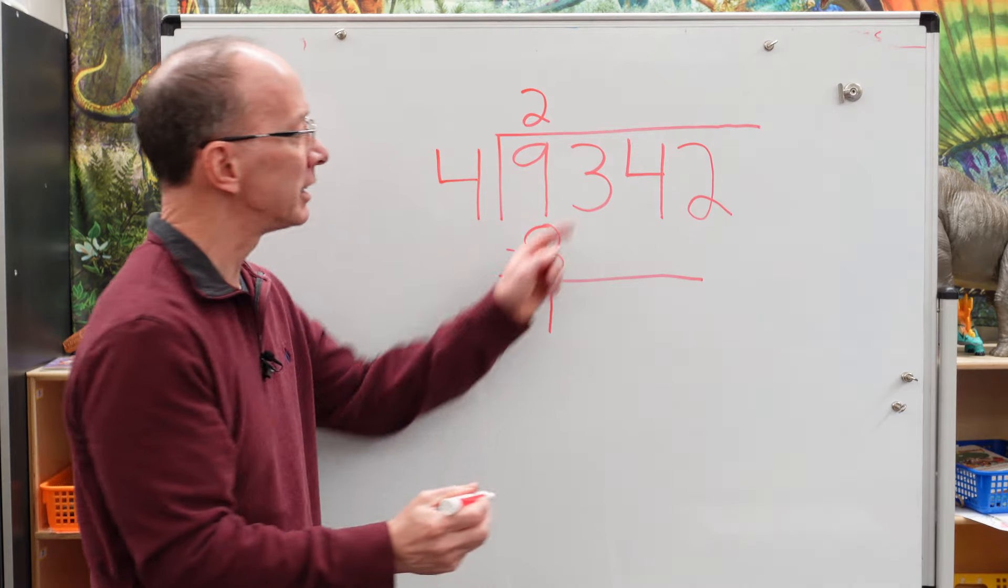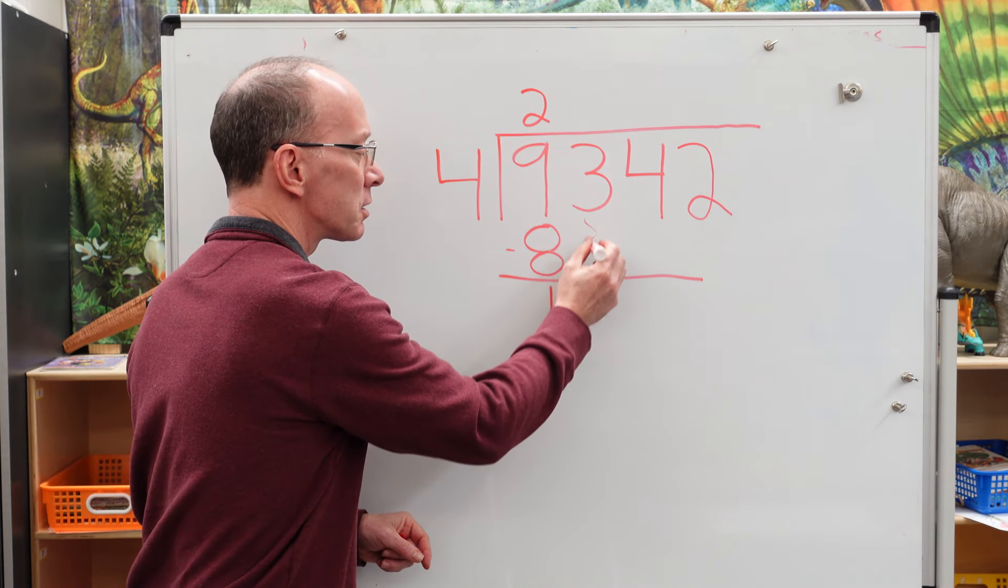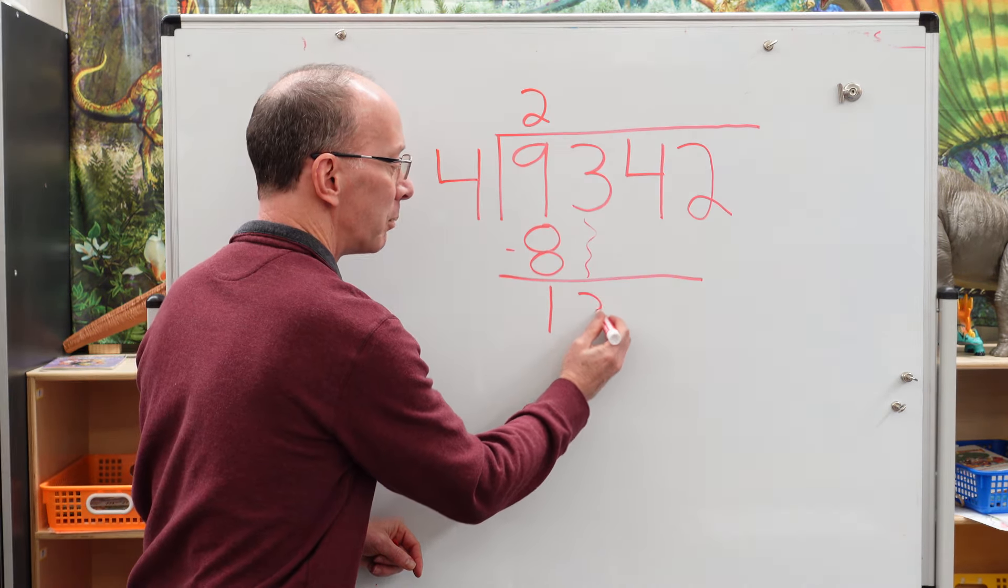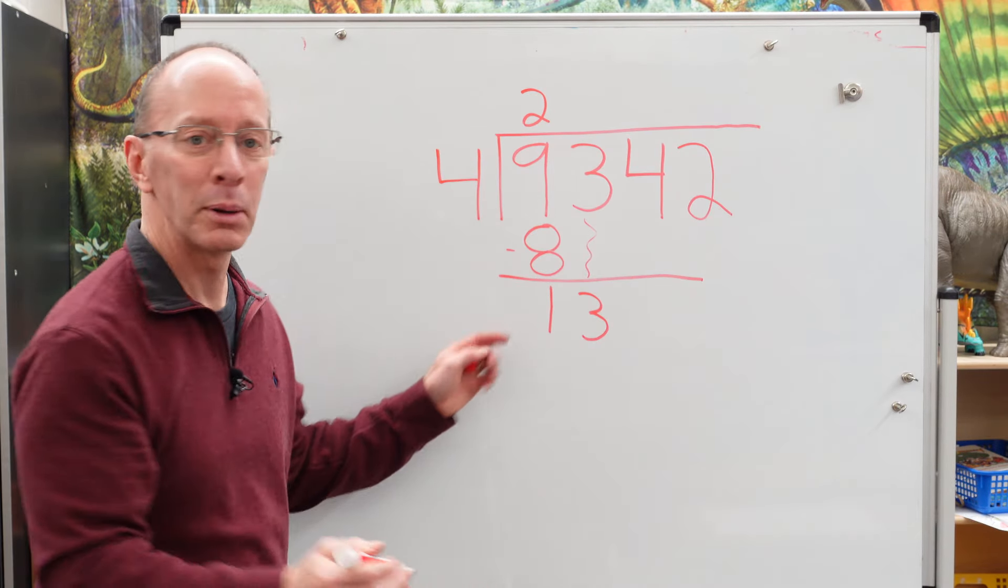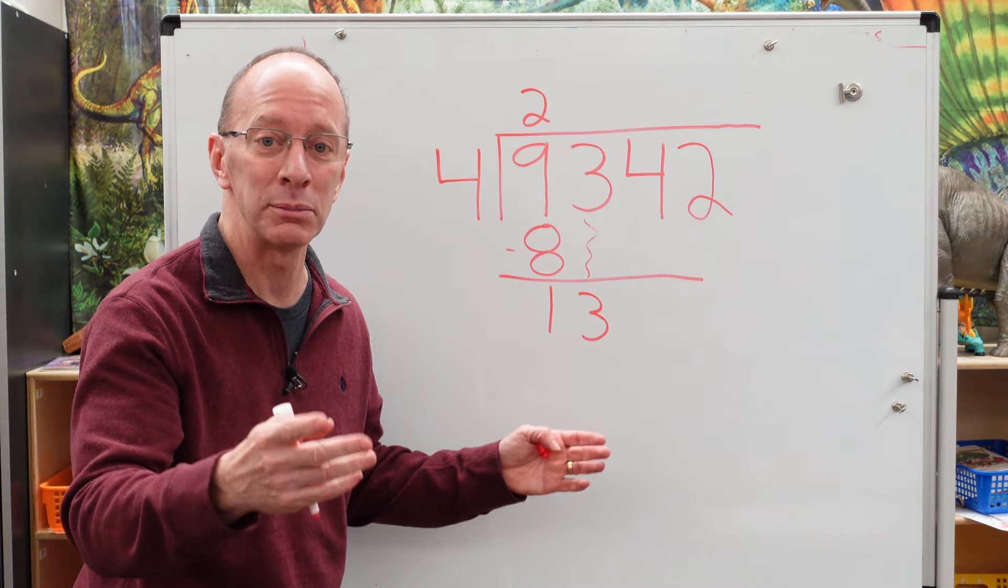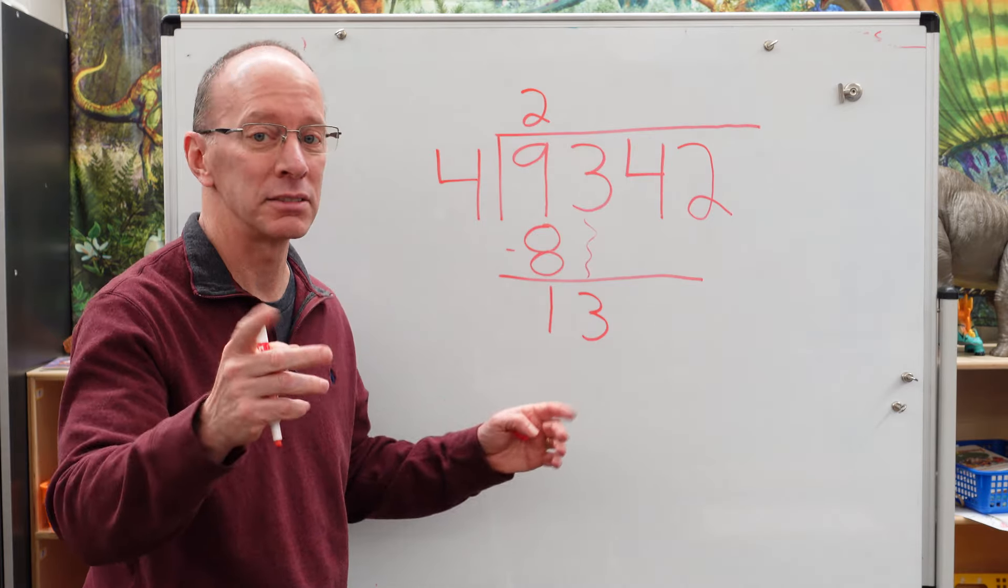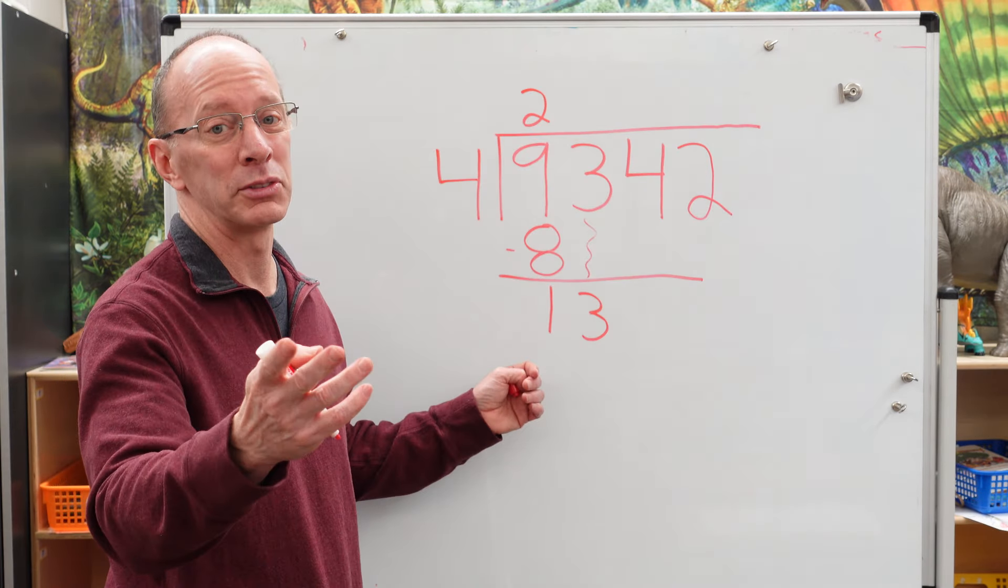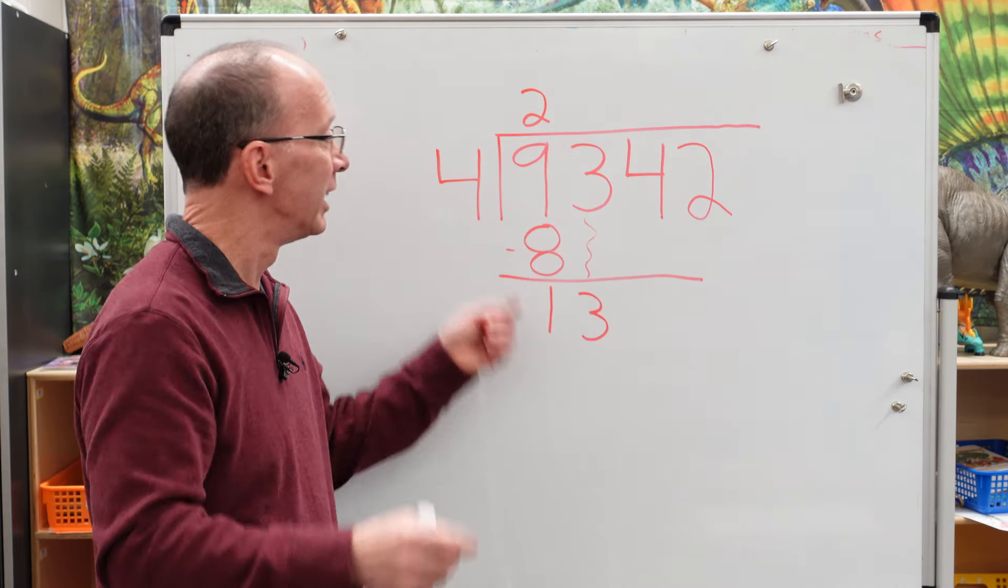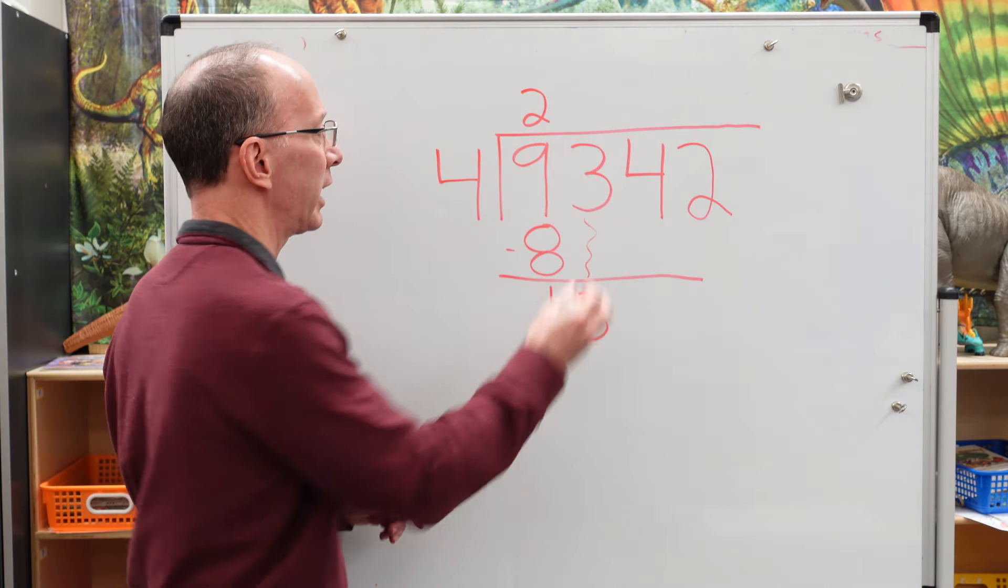Then we go on to the next number. Drop it down. Just drop it down. Down right here. And put a three there. Now remember we were talking about fours. We said four times two is eight. Four times three is 12.